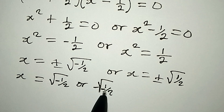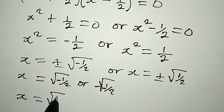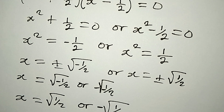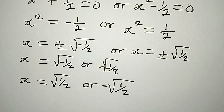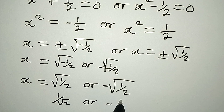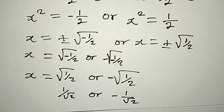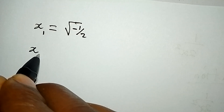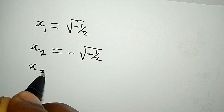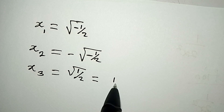From these values, the four solutions are: x1 equals square root of negative 1 over 2, x2 equals negative square root of negative 1 over 2, x3 equals square root of 1 over 2, which is the same thing as 1 over root 2.